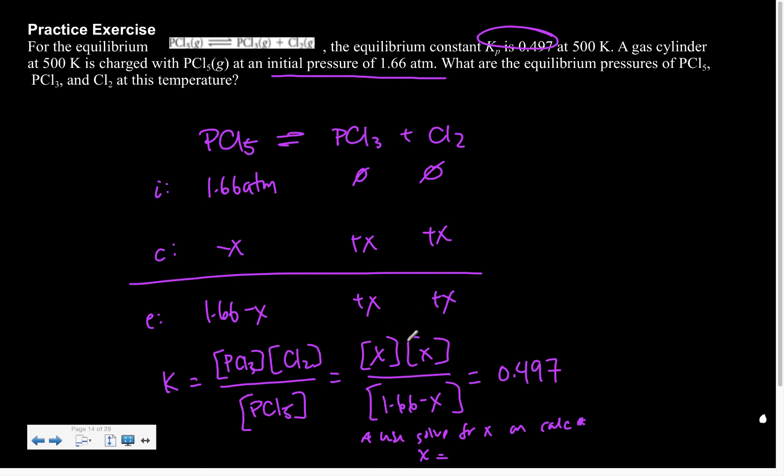So then once I got x, I would solve for these. So x would be my concentrations for those, and 1.66 minus x would be my concentration for that. Does that make sense? Now, I don't mean x can be bigger than this. I mean x couldn't be bigger than 1.66. That's what I mean.